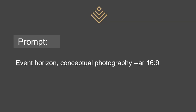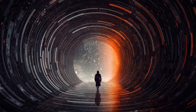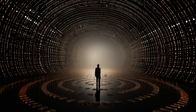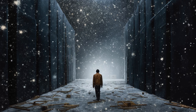The next prompt is 'event horizon conceptual photography.' Here it seems like MidJourney wants to add a person — someone walking away from the viewer — in each one of these results. It's not necessarily right or wrong, but it's good to take note of and observe, in case it comes in handy later when prompting. This one here is probably my most favorite of the conceptual photography bunch.